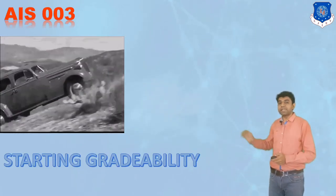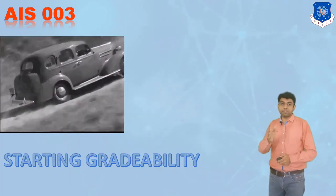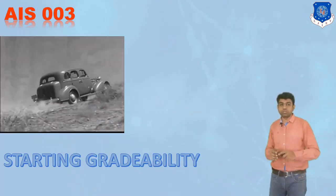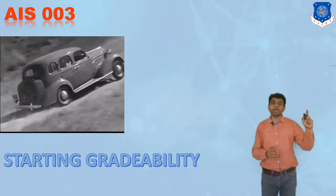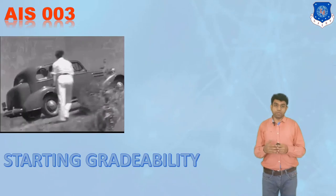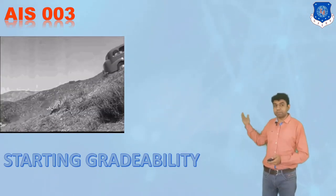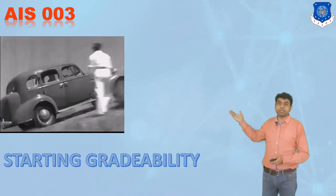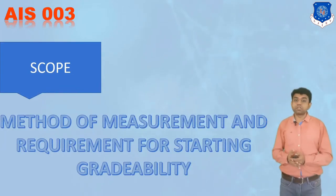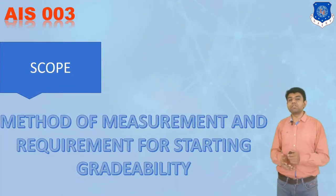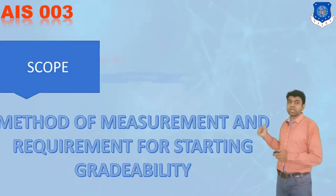Let's begin with the first standard, that is AIS 003. This AIS 003 standard is for starting gradability. Gradability is to check how much slope the vehicle can travel — how much rise over run the vehicle can manage. That is evaluated under AIS 003. The scope is that the method of measurement and the requirement for starting gradability has been evaluated under this standard.